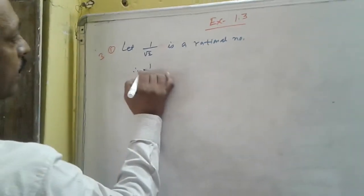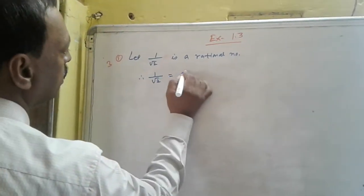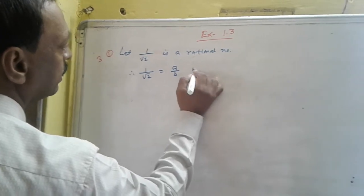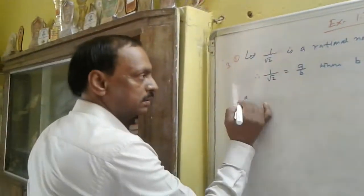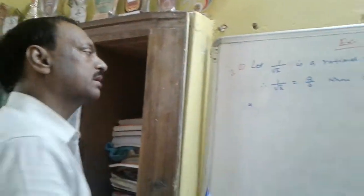Therefore, 1 by root 2 is equal to a by b, where b is not equal to 0. Now, same method, same procedure.